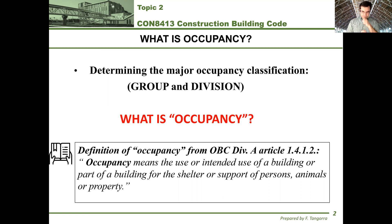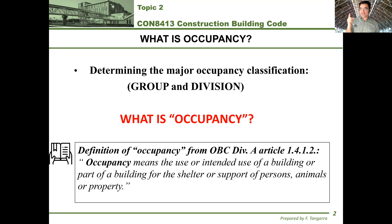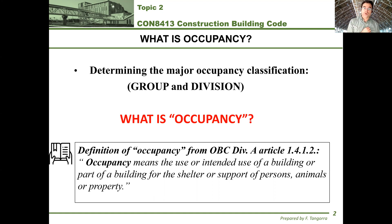I put the definition on screen so you can see it. Here's an interesting thing about the building code: whenever you find a word that is italicized — written at an angle — that means that word is actually defined in Division B under Article 1.4.1.2. Go there right now; pause the video and go see under Division A in Volume 1, Article 1.4.1.2 and find the same definition of occupancy.